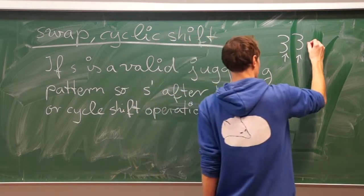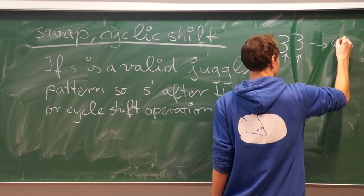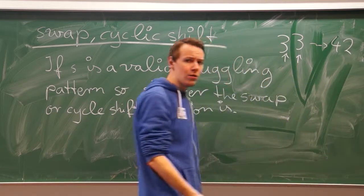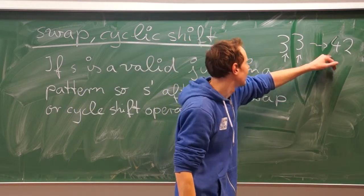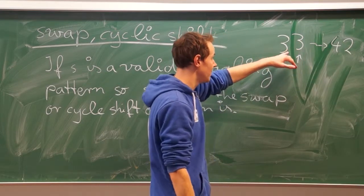And end up in 4-2, for example. Then I know, amazing, 4-2 is also a valid juggling pattern because I can swap back and 3 is a valid pattern.